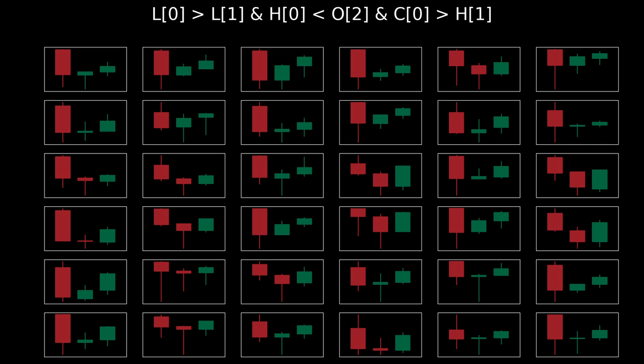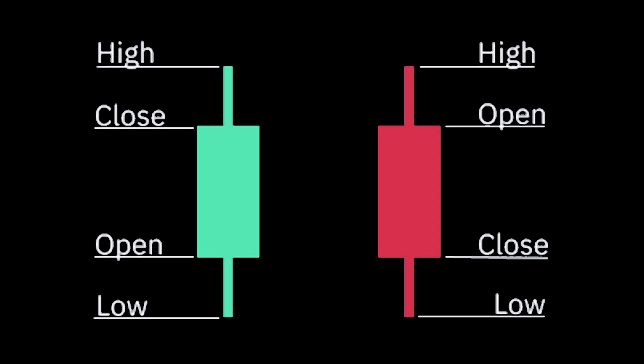Let's build the algorithm. We have four input series that make up the candlestick data: the open, high, low, and close. We will use these to build our patterns.